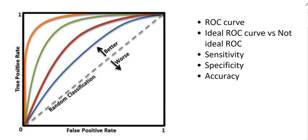The ROC curve is a relationship between the true positive rate and the false positive rate. The true positive rate means sensitivity — how many cases you found that are truly 100% positive, meaning they truly have the disease or were truly cured by a specific treatment.